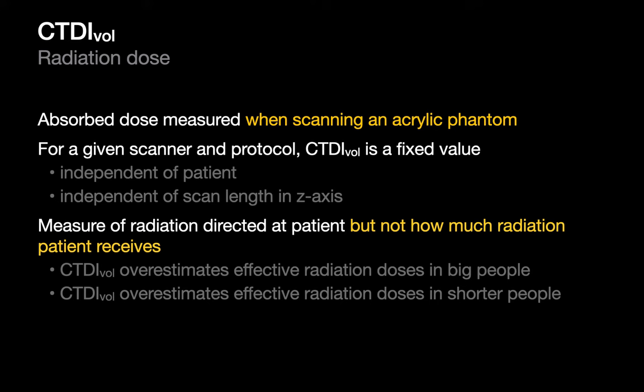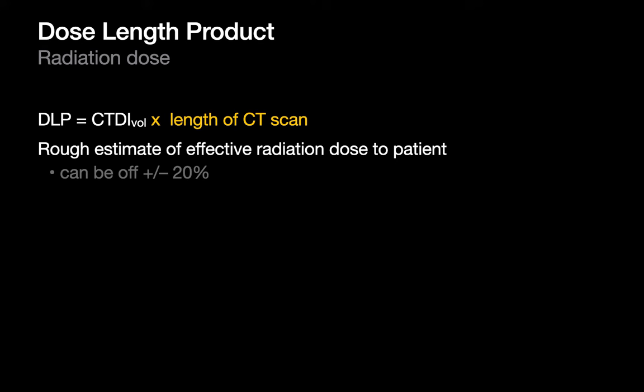Since CTDIvol is also independent of cranial-caudal scan length, it will overestimate effective radiation in shorter patients. To partially account for this, a second value called the Dose Length Product (DLP) is used. DLP is simply CTDIvol multiplied by the length of the scan in the Z-axis. The units of CTDIvol are milligrays, so the units of DLP are milligray-centimeters.